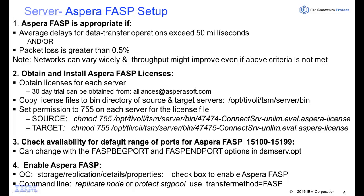You'll then set the permissions to 755 for the license file by issuing a chmod command. You'll also need to check the availability of the default ports for Aspera FASP. The defaults are 15,100 to 15,199. If you want to change those, you can go into the dsmserv.opt file and set the FASP beg port and the FASP end port options.